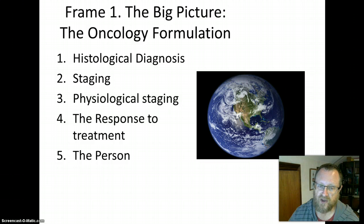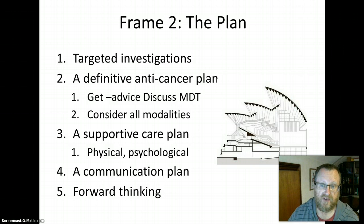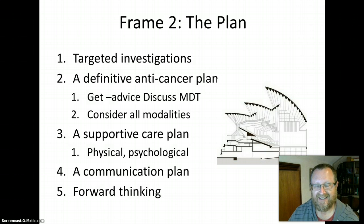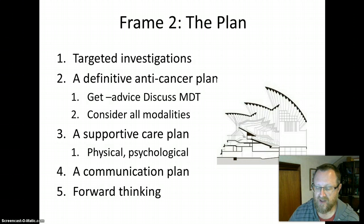By 'the person' I mean not only those psychosocial aspects of coping with cancer, but a genuine idea of who this person is. An oncology plan can also be looked at through five components: targeted investigation, definitive treatment against the cancer, advice from an MDT considering all modalities of care, a supportive care plan addressing physical and psychological aspects, a communication plan, and always thinking ahead.